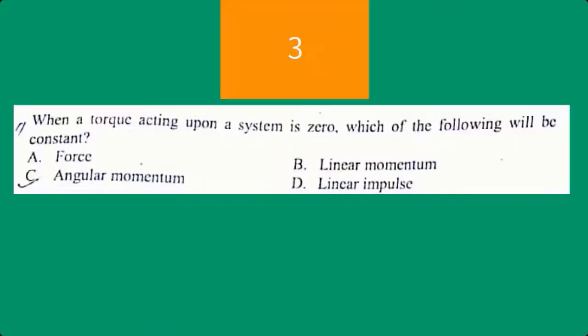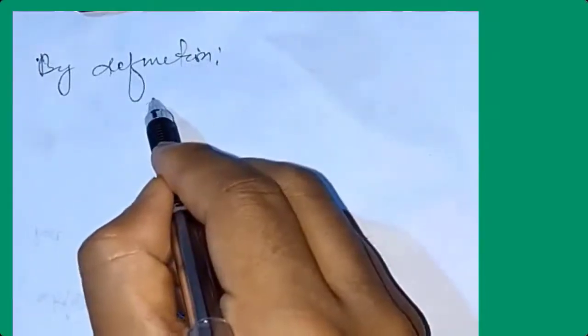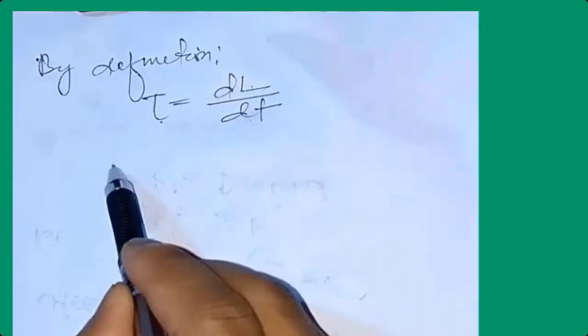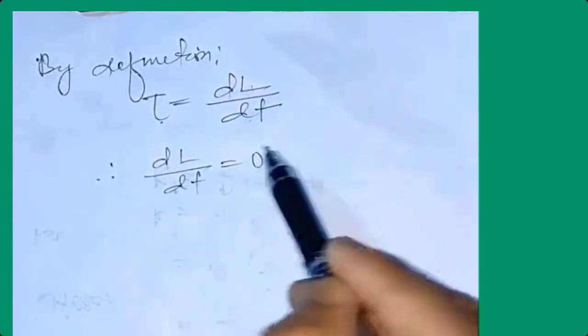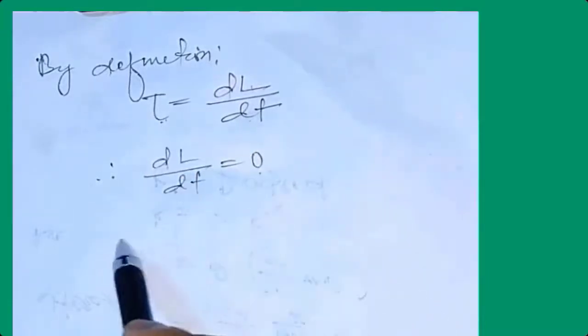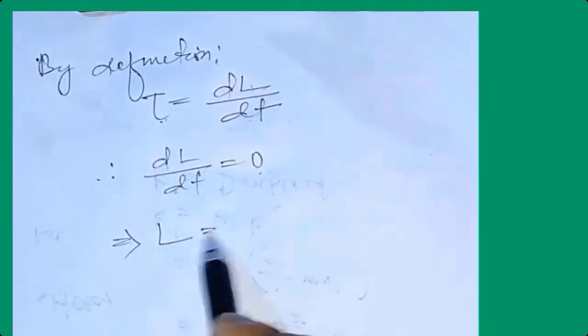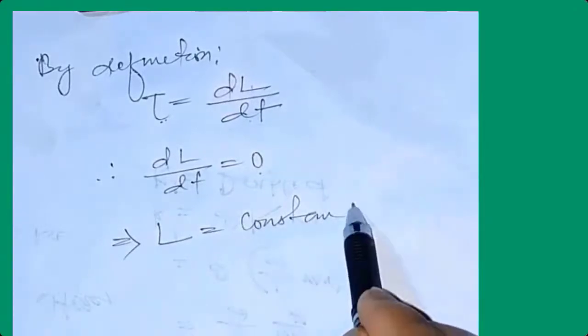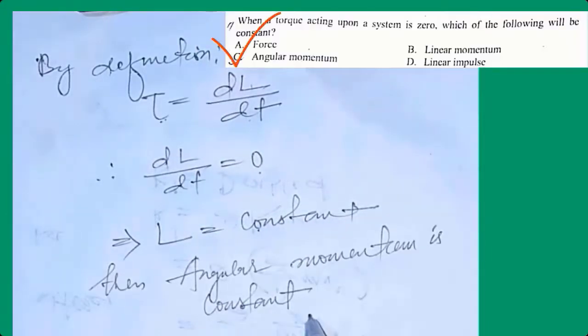When the torque acting on a system is zero, which of the following is constant? By definition, torque is the rate of change of angular momentum. Therefore, since torque is zero, the angular momentum L is constant. Angular momentum is constant.